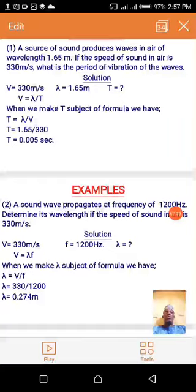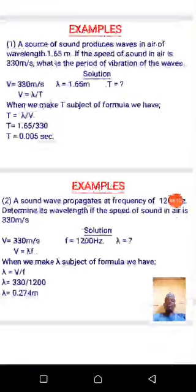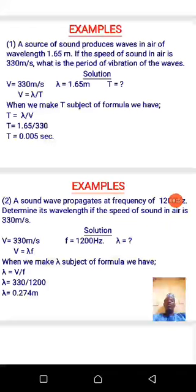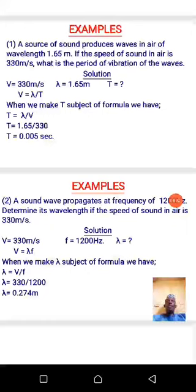Solution: from the question, the speed of sound v is 330 meters per second and the wavelength lambda is 1.65 meters. Using v equals lambda over T, we make T the subject of the formula: T equals lambda over v. Substituting, T equals 1.65 divided by 330, giving a period of exactly 0.005 seconds. That is the time it takes the wave to make one complete oscillation.